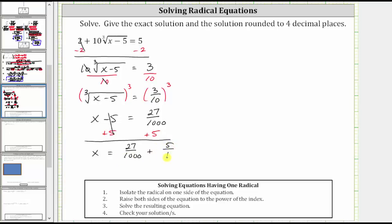To add, we need to obtain a common denominator, which is 1000. To write five over one as an equivalent fraction with denominator 1000, we multiply the numerator and denominator by 1000, which gives us x equals 27 over 1000 plus 5000 over 1000, which gives us 5027 over 1000.